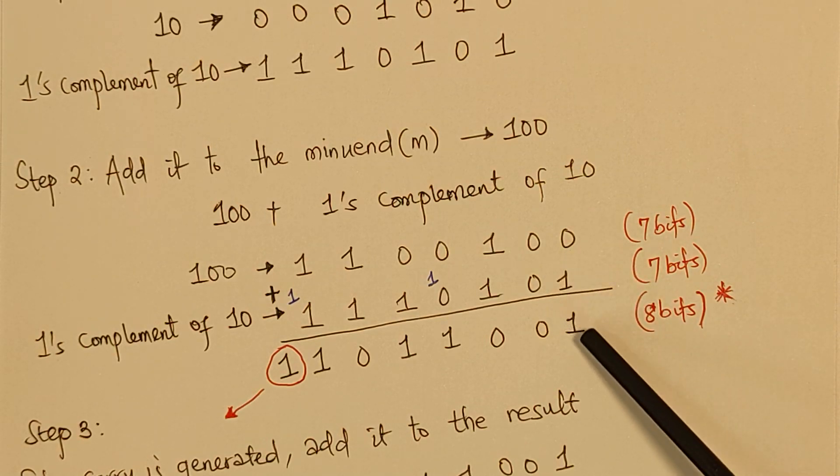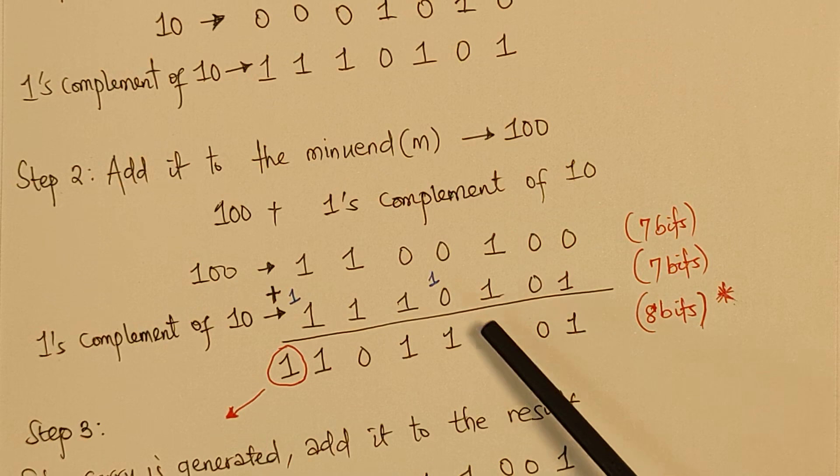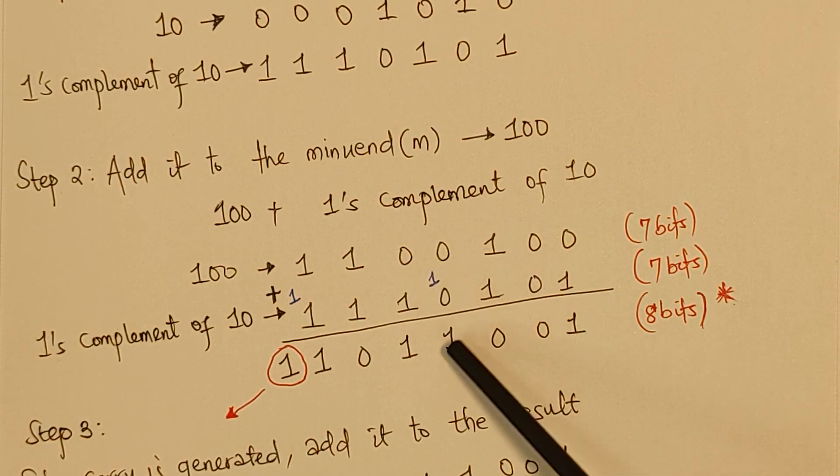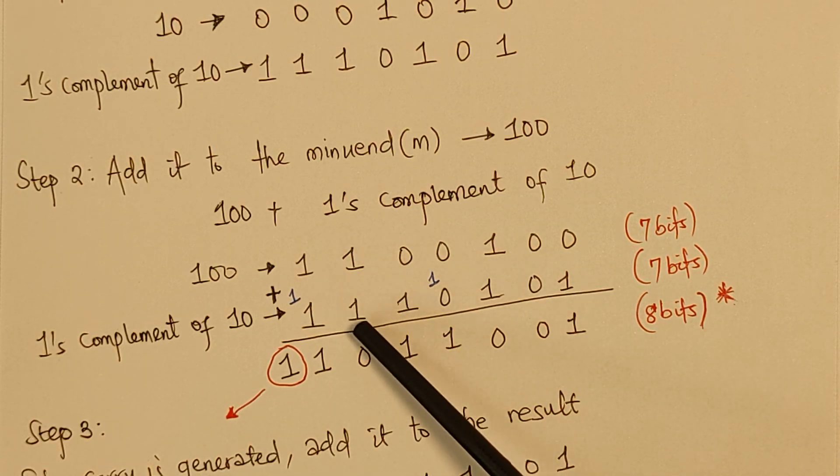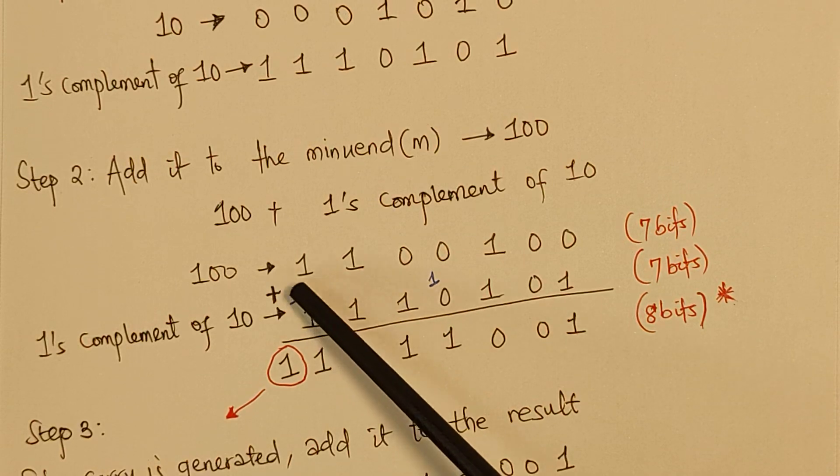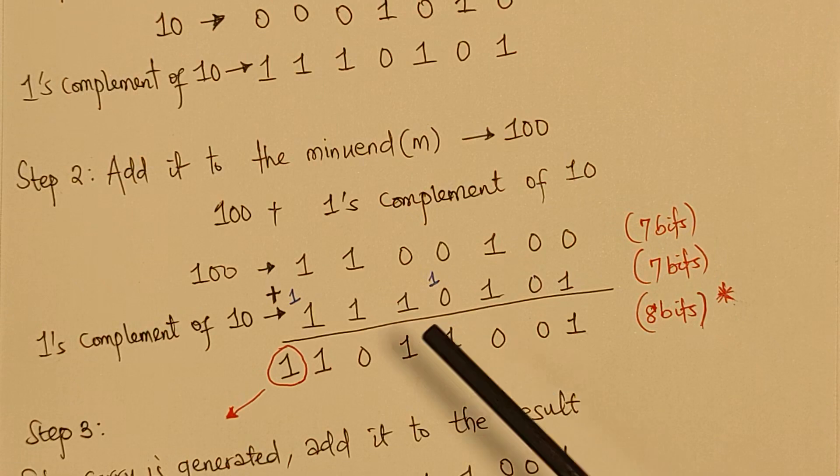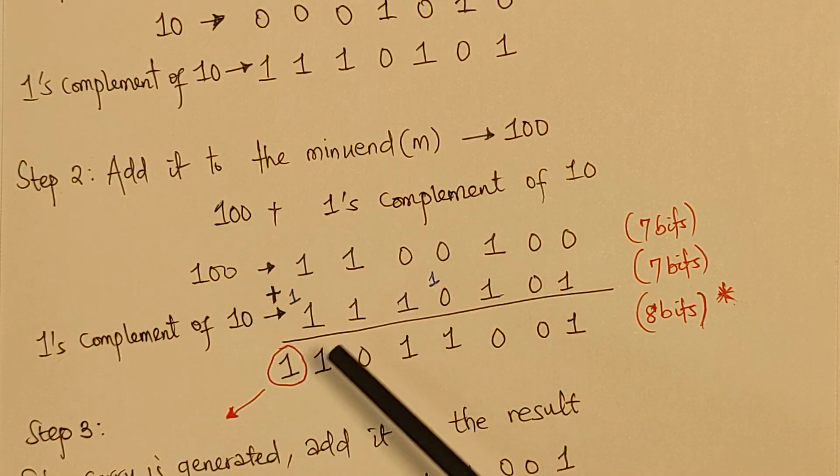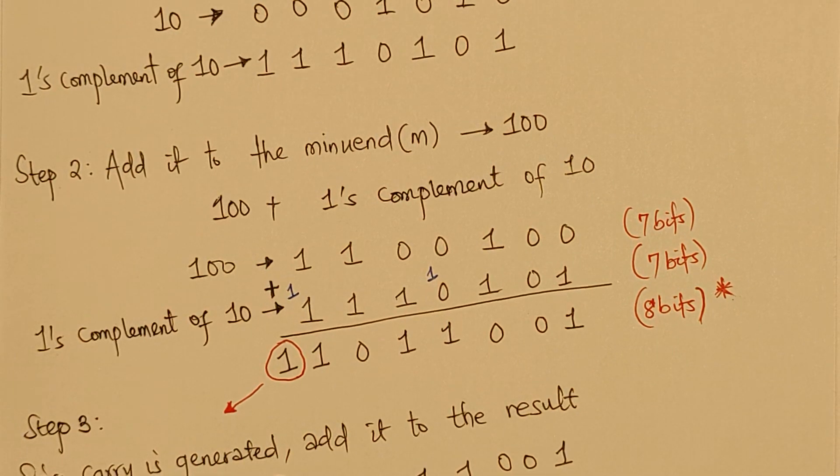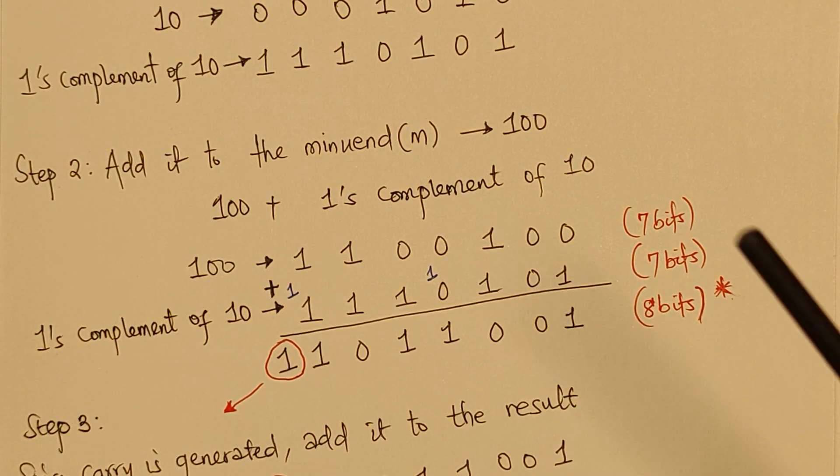So, 0 plus 1 will be 1, 0 plus 0 will be 0, 1 plus 1 will be 0 with a carry 1. 0 plus 0 plus 1 will be 1, 0 plus 1 will be 1, 1 plus 1 will be 0 with a carry 1. 1 plus 1 plus 1 will be 1 with a carry 1. Now, take note that the symbols I'm using as blue color is actually our carry. So, to that, we are going to have 1, 1, 0, 1, 1, 0, 0, 1.